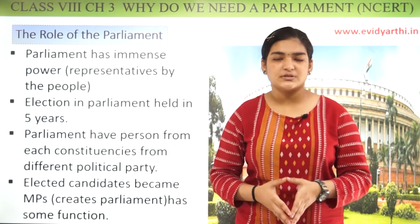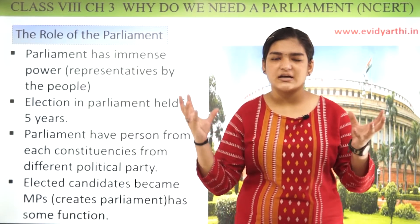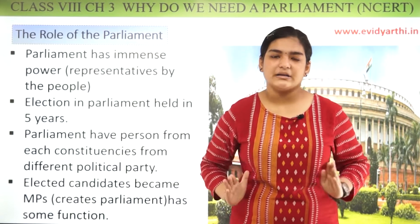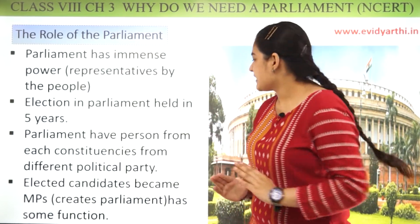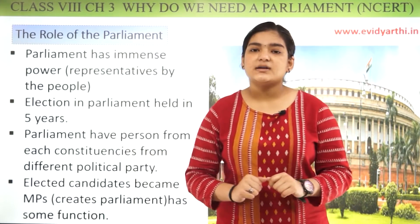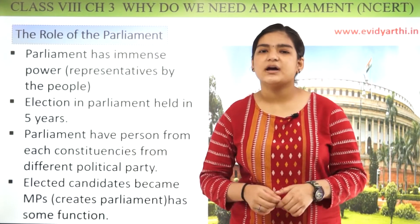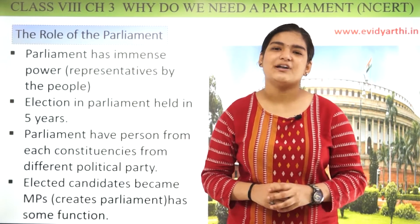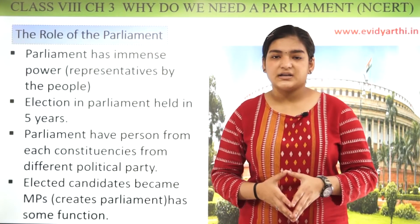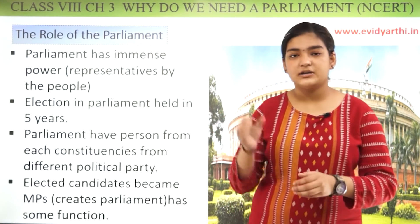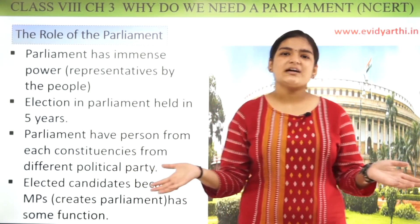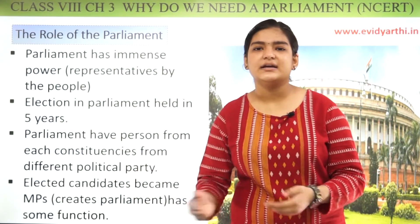543 constituencies hain, 543 areas hain. Toh har ek area se ek-ek member aata hai parliament ke under. Alag-alag political parties hain — koi BJP ka hai. Sab log apne political party ko naam bhi dete hain. Jaise ki Aam Aadmi Party — yaani ki logo ke hit mein party, logo mein bahut shakti ho, unke liye lad raha hai. Obviously sari political parties unke liye ladti hain.